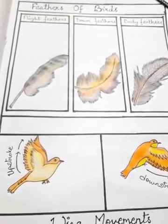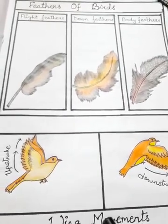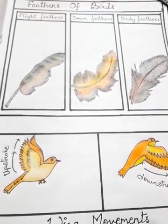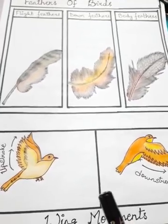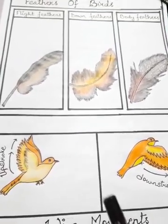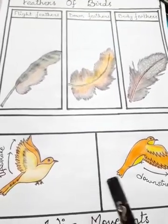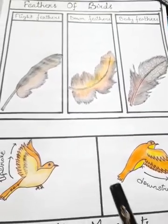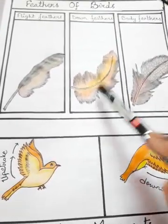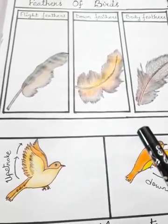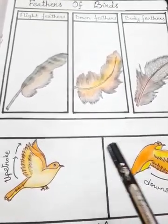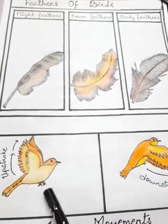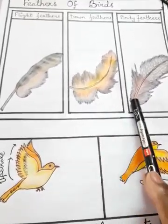Before we study the different types of feathers, let's understand whether feathers and wings are the same. Feathers are fluffy structures attached to wings — they are made up of keratin. Whereas wings are modified forelimbs for flight, made up of bones and muscles. So feathers and wings are different.